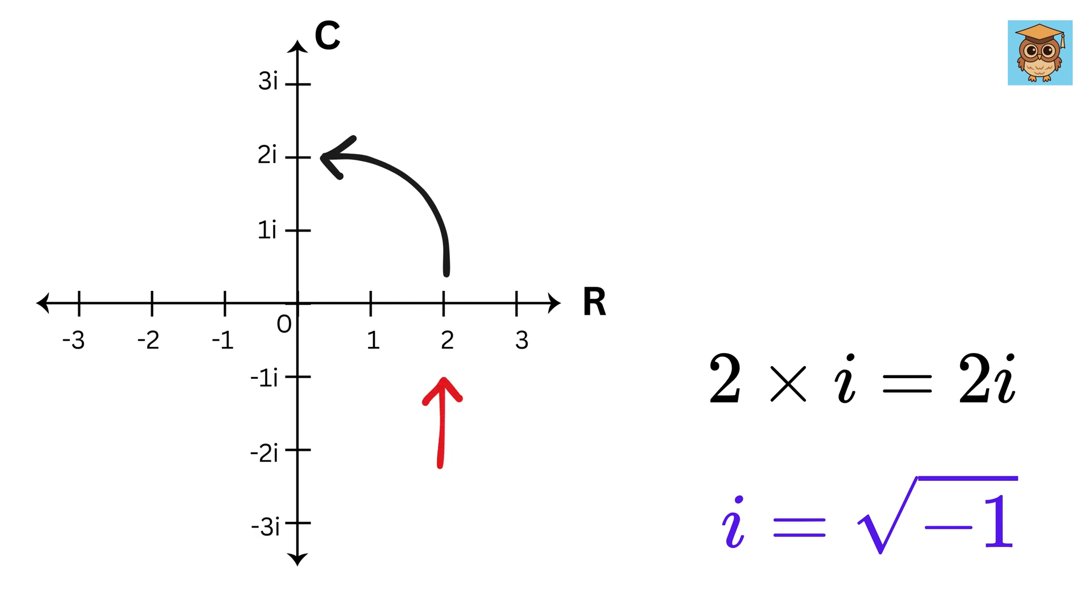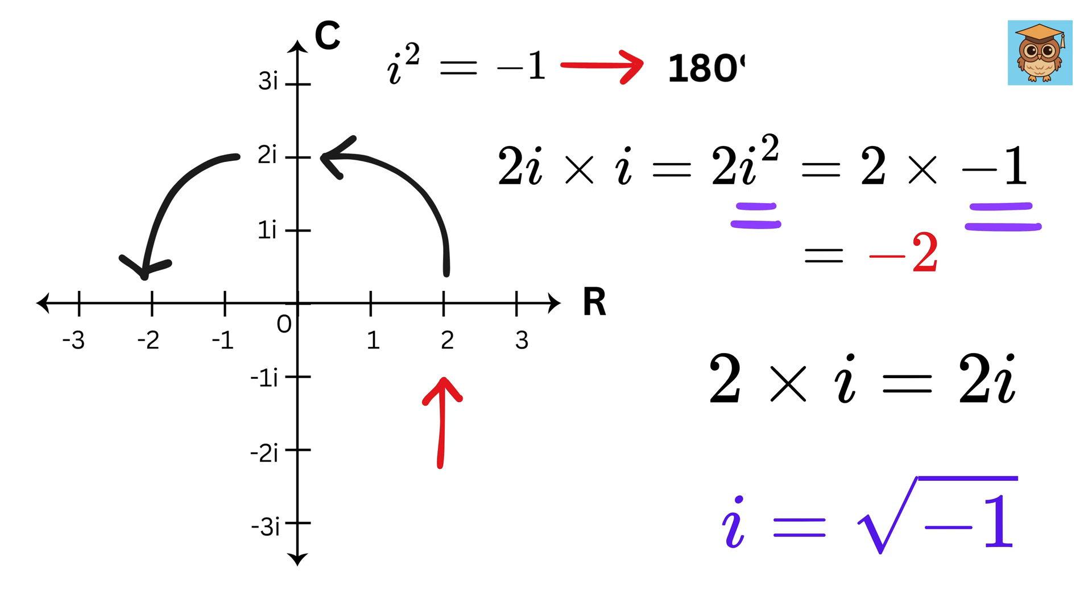So, after rotating this 2 by 90 degrees, we reach here, which will be 2 times i. And now, what if I want to rotate it by another 90 degrees? It will be 2i times 1 more i, or 2i², which we know is -1, as i² is -1. So, we see that this thing becomes the same as multiplying by -1 and rotating it by 90 degrees twice, or 180 degrees.